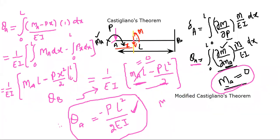The modified Castigliano's theorem gives us the freedom that wherever we need to find the slope or deflection — whether a load or moment is acting there or not — we assume the load or moment acting at that point, find the bending moment equation, use Castigliano's expression, and once the final expression is obtained, put the load or moment equal to zero to get the slope or deflection.